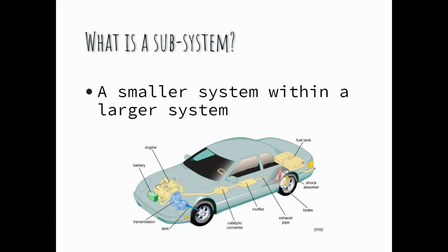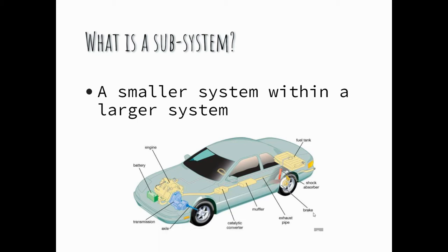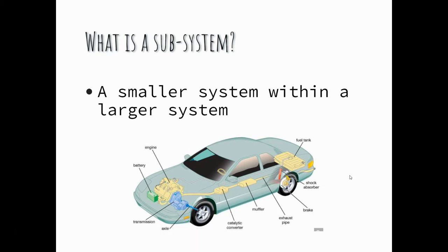For instance, the engine has multiple parts that are all working together to make the car have power. The brakes have multiple parts working together to stop your car. Although there are some parts involved, they're all smaller systems within the larger system itself. The more complex the system is, the more subsystems they should have.